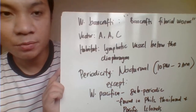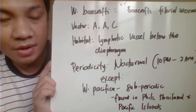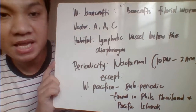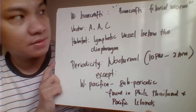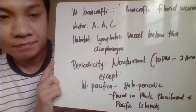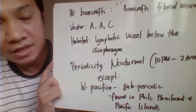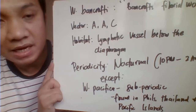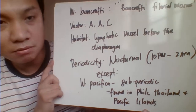We begin our discussion with the species of filarial worms. We have Wuchereria bancrofti, also known as Bancroft's filarial worm. You get infected by Wuchereria bancrofti because of the bite of your Anopheles, Aedes, and Culex mosquitoes.